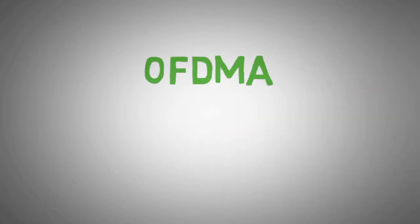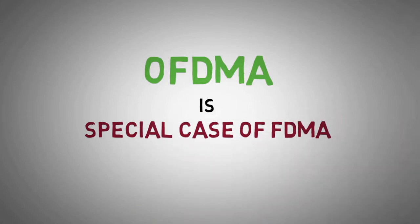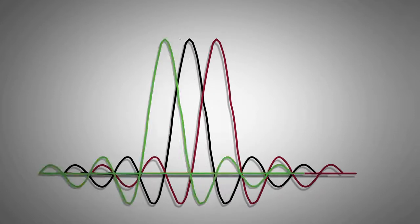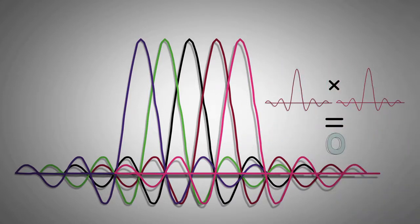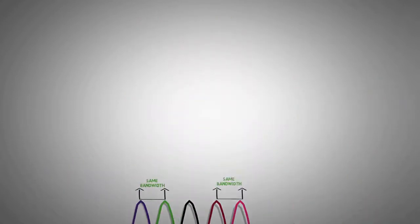OFDMA or orthogonal frequency division multiple access is a special case of FDMA, where users are provided a set of sub-carriers overlapping in frequency domain. However, these sub-carriers are specially designed to be orthogonal to each other, which allows them to occupy the same bandwidth without any interference.